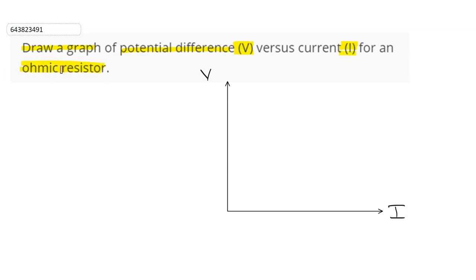We are told to draw a graph for an ohmic resistor. The ohmic resistor is the one which obeys Ohm's law.